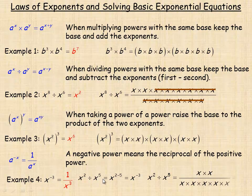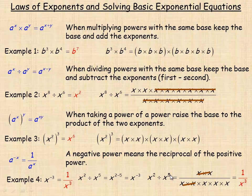Evaluating the same division another way: there are two x's on top and five x's on the bottom. Two x's cancel from both, leaving a one on top and x times x times x — that's x cubed — on the bottom. So we also get one over x cubed. Since both methods evaluate the same expression, x to the negative three and one over x cubed must be the same thing.